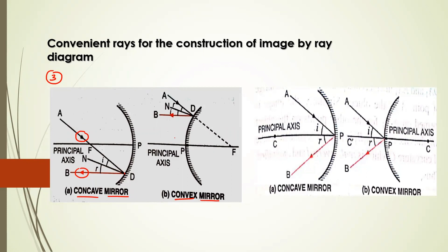Same as we have done earlier — after reflection, it is always a virtual focus in the case of a convex mirror, so we draw a dotted line behind the mirror. After reflection, the ray always goes parallel if your incident ray passes through the focus. This is your third convenient ray.